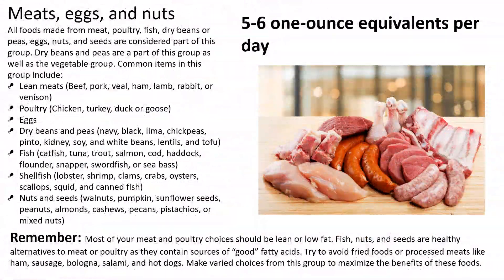Now we have our meats, eggs, and nuts. All foods made from meat, poultry, fish, dry beans, or peas, as well as eggs, nuts, and seeds are considered part of this group. Common items include lean meats like beef, pork, veal, ham, lamb, rabbit, or venison. Poultry includes chicken, turkey, duck, or goose.